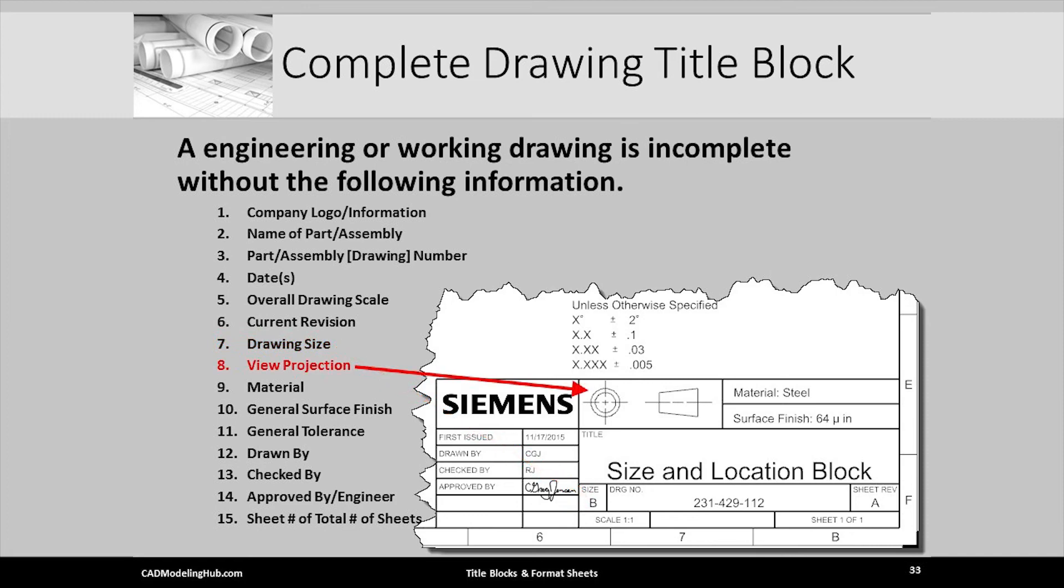I have edited the default Siemens title block so that I could place the third angle projection symbol inside the cell. Some CAD systems allow the projection symbol to be placed anywhere on the sheet. I personally believe it is better to have this symbol be a formal part of the drawing title block.